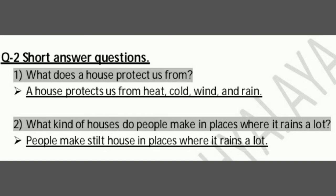Second short answer: what kind of houses do people make in places where it rains a lot? Answer: people make stilt houses in places where it rains a lot. Stilt means iron की long pole होती है, उसके उपर जो house बनाते हैं उसे stilt house बोलते हैं — ground से थोड़ा उपर होता है.